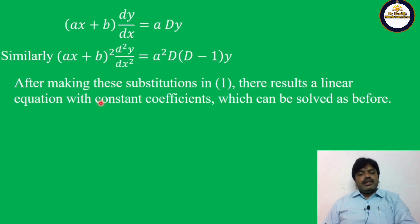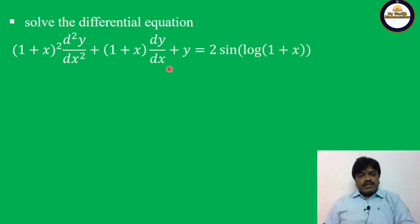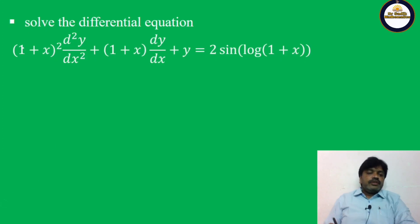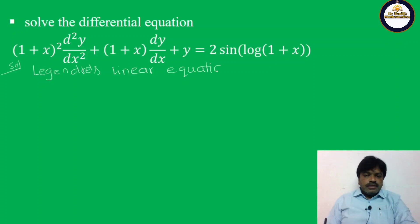Let us see the problems on Legendre's linear equation. Solve: (1+x)² d²y/dx² + (1+x) dy/dx + y = 2 sin(log(1+x)). By observation, the coefficient (1+x)² is of the form (Ax+b)², so this equation is a Legendre's linear equation.